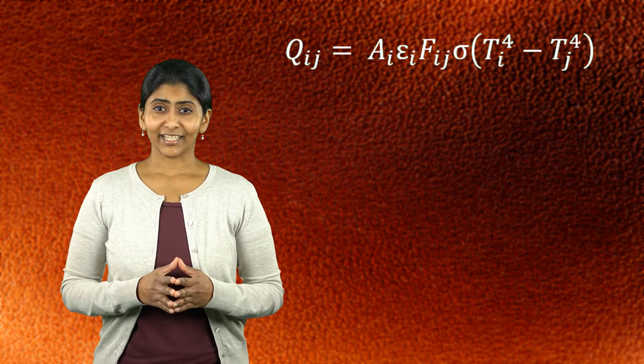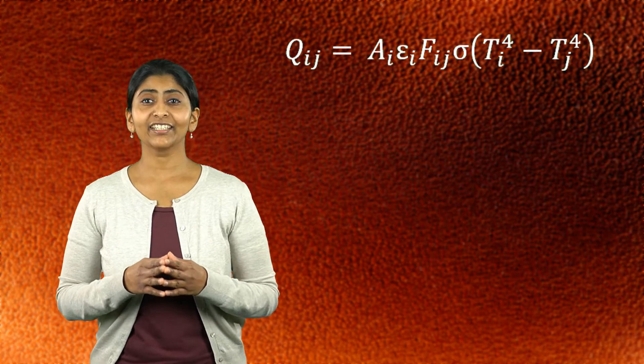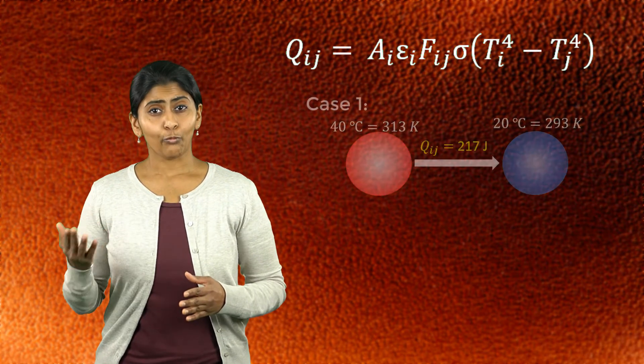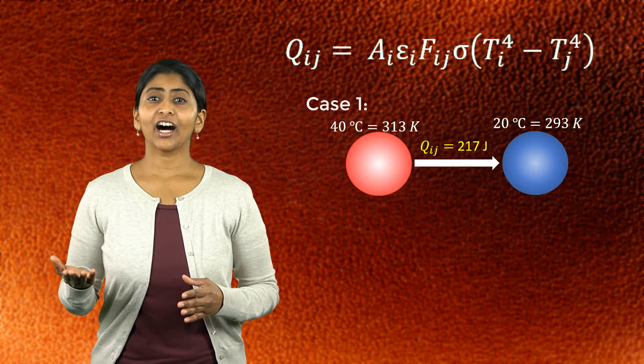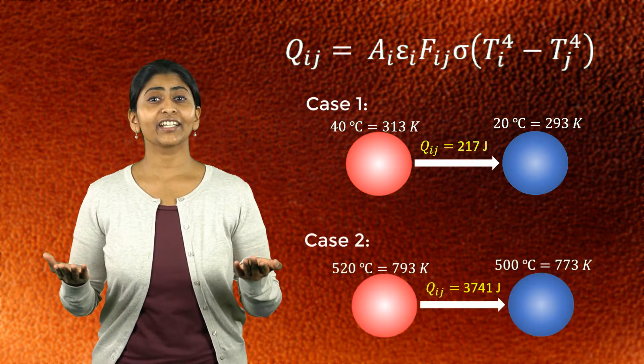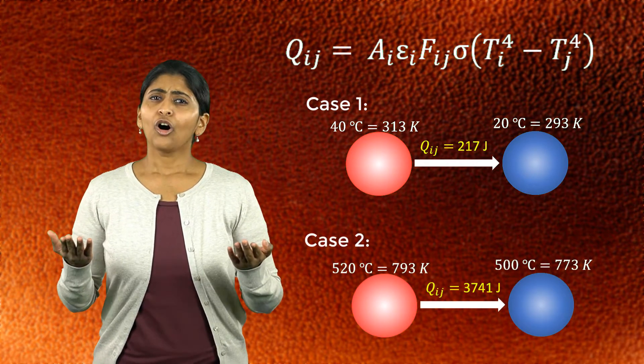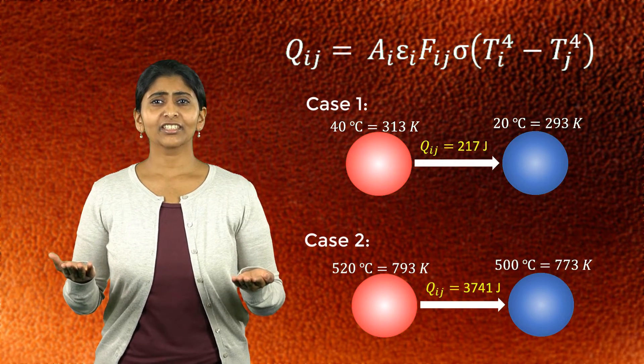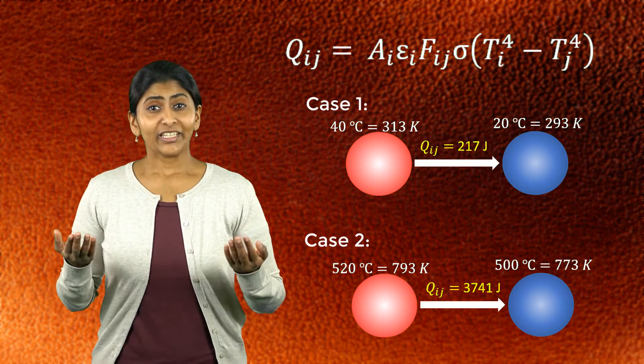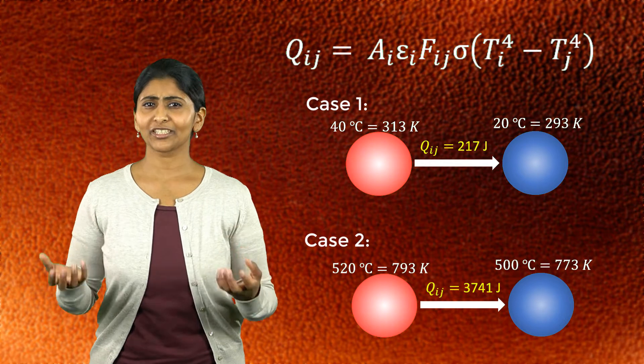Let's take a simple example of two objects with a difference of 20 degree Celsius, but consider two cases: one when the two objects are 20 and 40 degree Celsius and another case when they are at 500 and 520 degree Celsius. Although the temperature difference is only 20 degrees between the two cases, we see that the radiated heat between them is close to 20 times different.